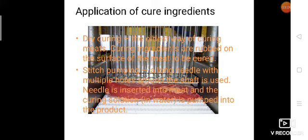Application of cure ingredients: Dry curing it is one of the oldest way of curing meat and curing ingredients they are rubbed on the surface of the meat to be cured. Salt and sugar they are simply rubbed on the surface of meat and it is our dry curing.